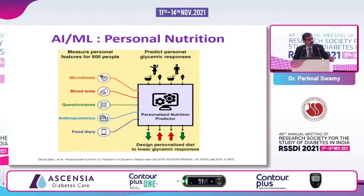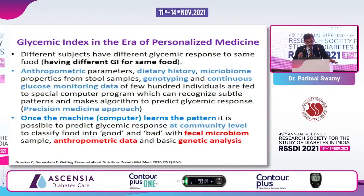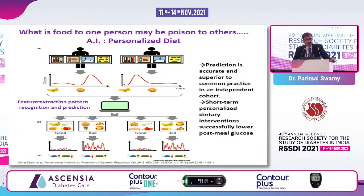Another application now available for commercial use is the role of AI and machine learning in personal nutrition. The first study from Israeli researchers trained their AI system on a huge dataset: continuous glucose monitoring, anthropometrics, food diary, questionnaires, blood tests, and microbiome analysis. After initial training, using only point-of-care tests — fecal microbiome analysis, anthropometric data, and genetic analysis — the AI system could predict the glycemic response to different food at community level. Surprisingly, 30% of patients had a good glycemic profile with so-called bad food, and 30% had a bad glycemic profile with so-called good food. When implemented in a clinical population, this resulted in a personalized dietary intervention that successfully lowered post-meal blood glucose.